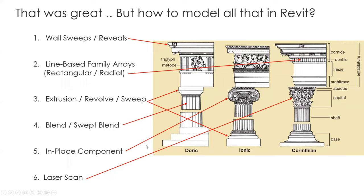The Ionic capital can be an in-place component, and the Corinthian can be a placed component as well. Sometimes this can be very complex, and you can model a couple of leaves and then do an array around the column, but that may take a lot of work. Depending on the result you want, this can be very demanding on your model. You can actually do a laser scan of the capital, bring it into Revit, and create a model out of it. The base is similar to the capital and can be done with extrusions, revolves, or sweeps.